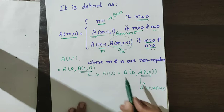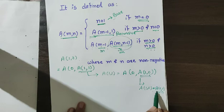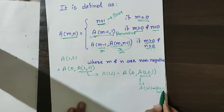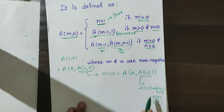Now solving a(0,1): since m equals 0, we apply the base case, which gives n plus 1. My n is 1, so 1 plus 1 equals 2. So a(1,0) equals 2.